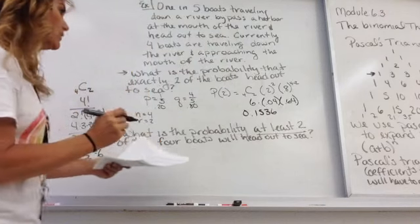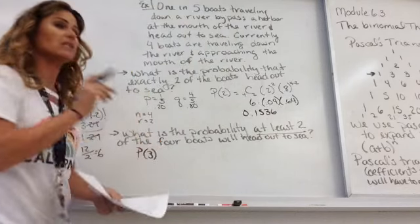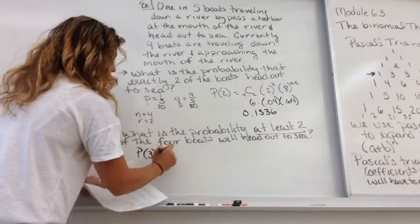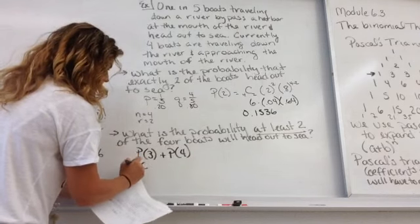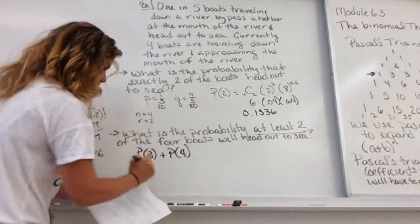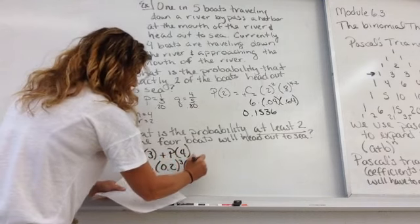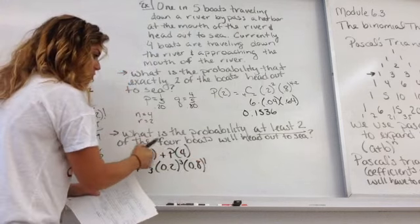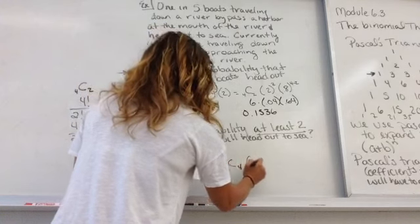Now, next one we have is the probability of at least two. So, that means we want the probability of at least two. That means three or four. So, the probability of three plus the probability of four. So, the probability of three, that's four things three times. 0.2 to the third times 0.8 to the first. These two have to add to the four. This is how many you want. This is what is left.